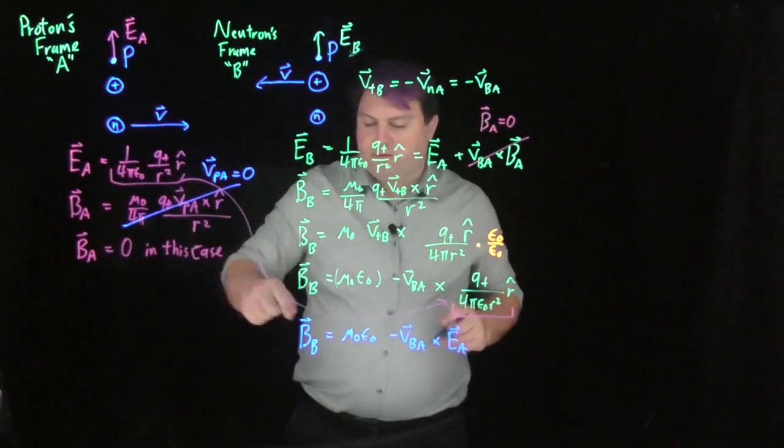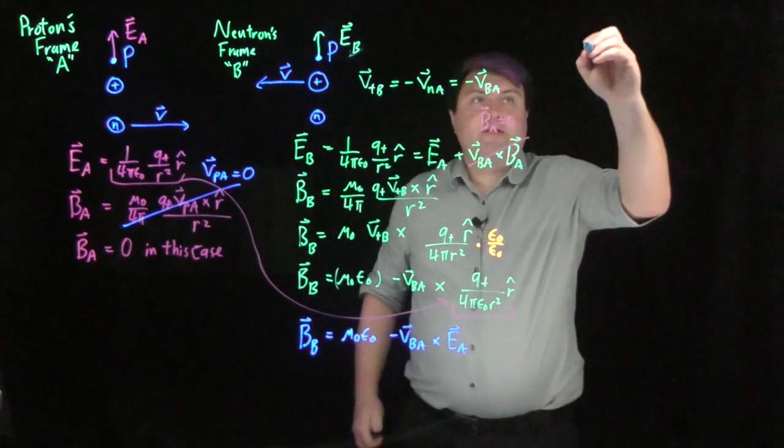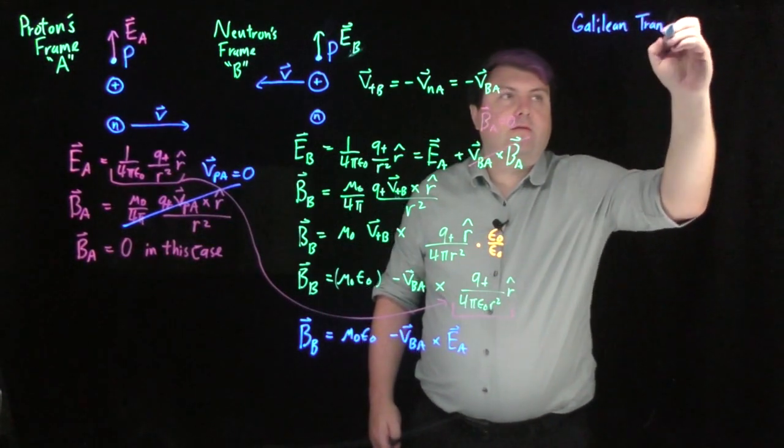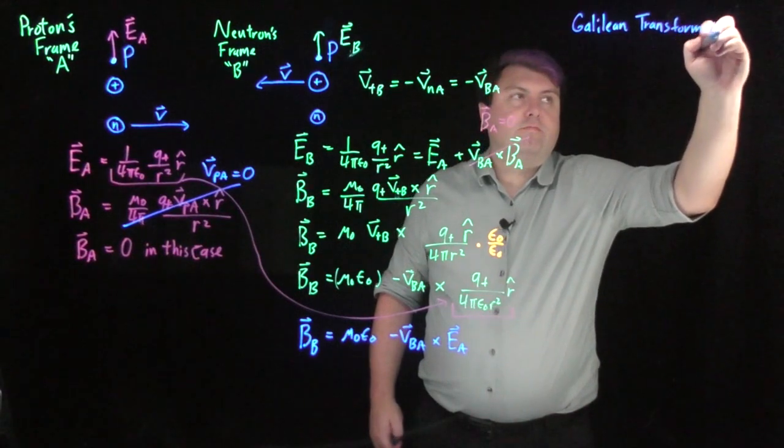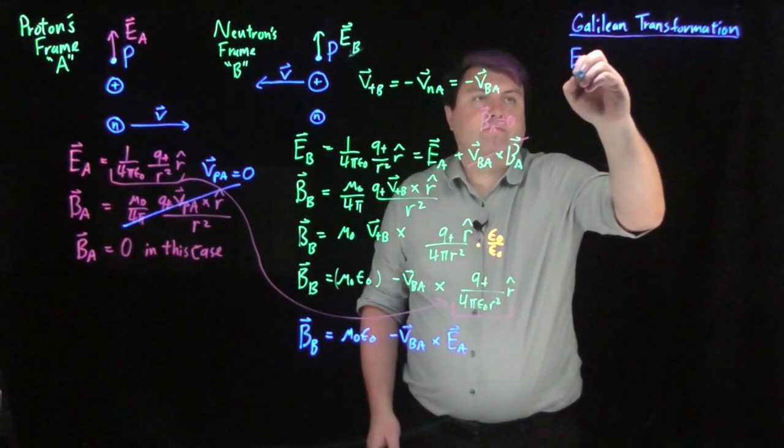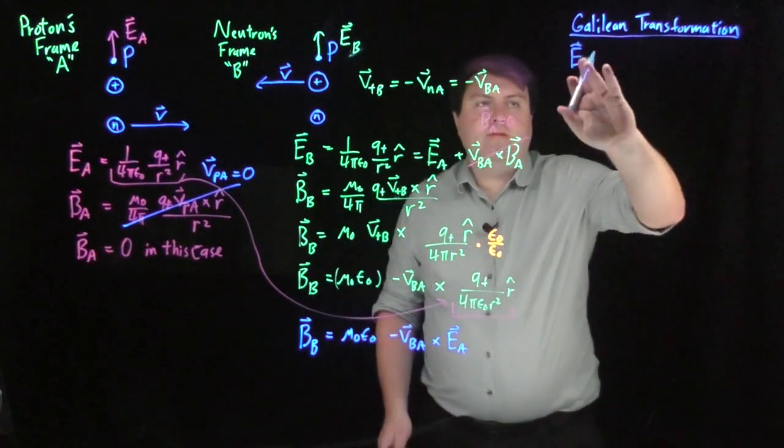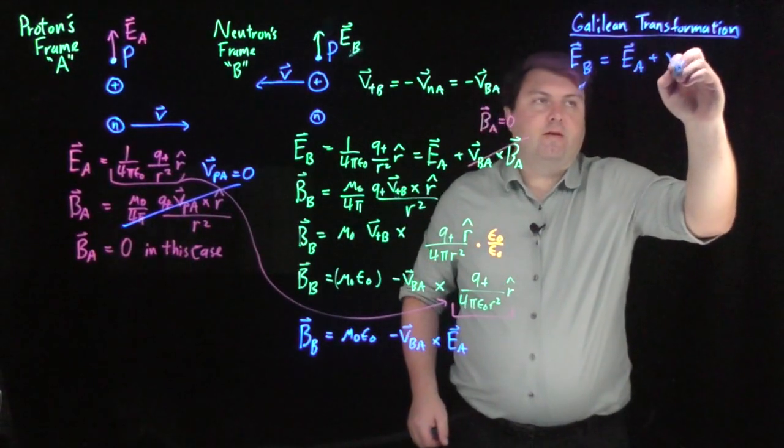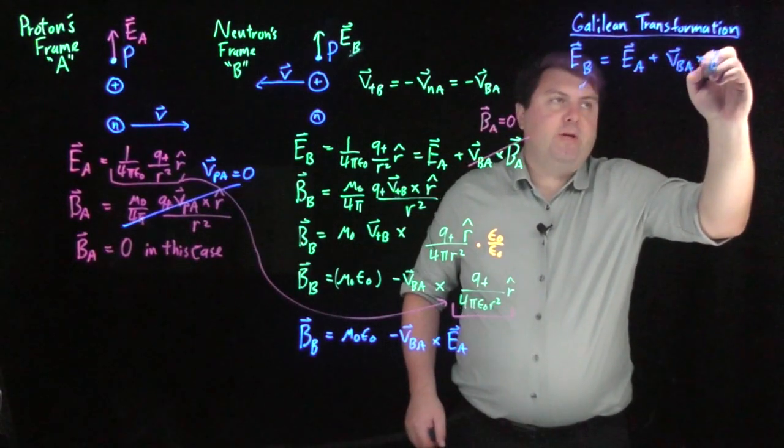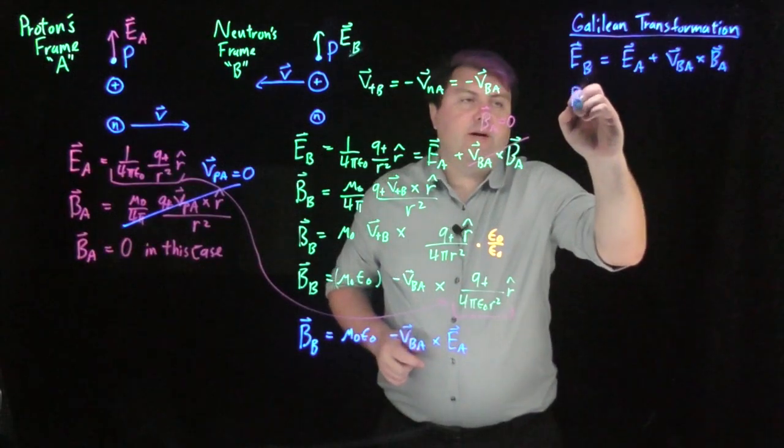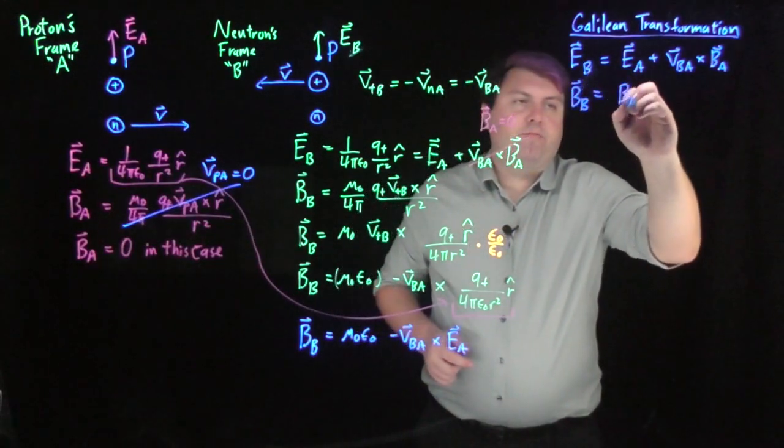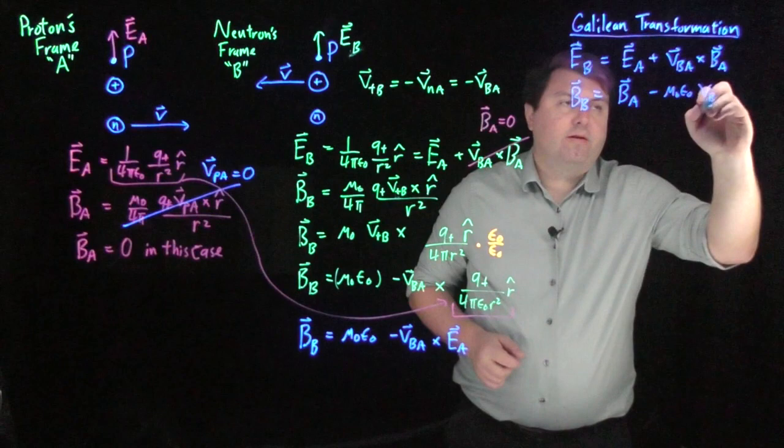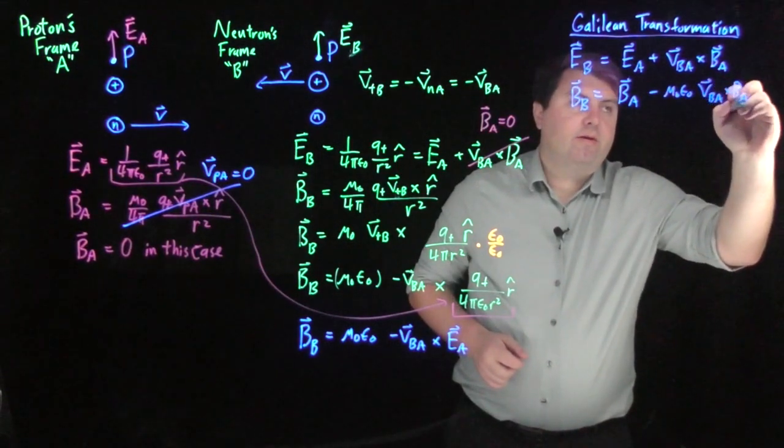And since my B_A is zero, I can always add zero to this. So I can get my Galilean transformation: E sub B is equal to E sub A plus V_BA crossed with B_A. And my B sub B is equal to B sub A minus mu naught epsilon naught V_BA crossed with E sub A.